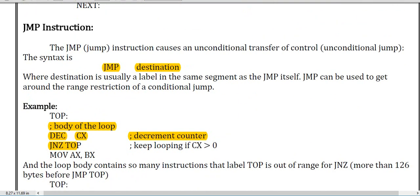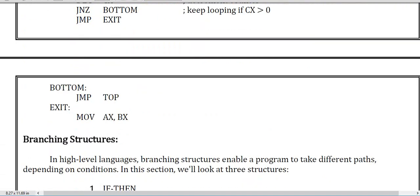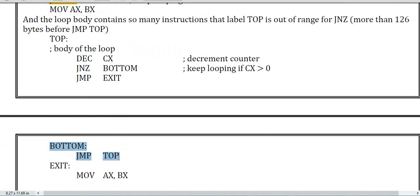Here is the JMP instruction. In the jump instruction you need to declare JMP, which denotes jump, and then the destination. For example, if you need to go to line 5 you write JMP 5. As you can see here, JMP TOP means it will go to the top section — that section is labeled 'top' followed by a double colon.